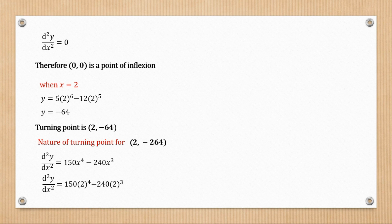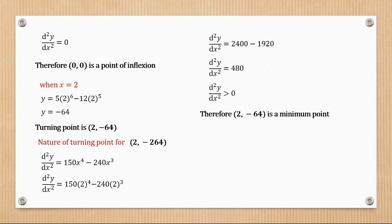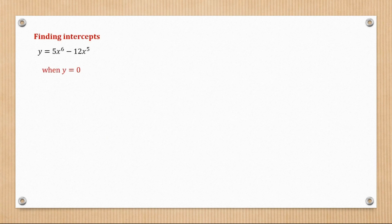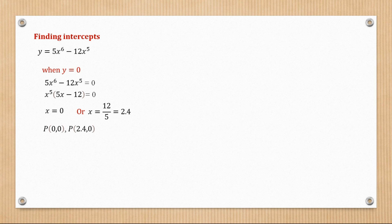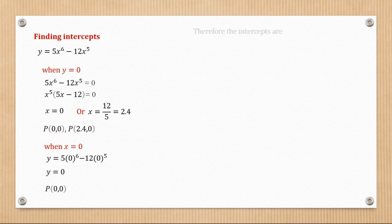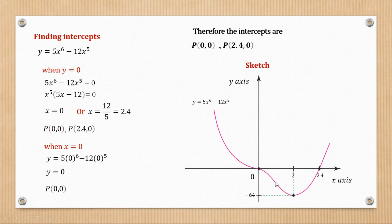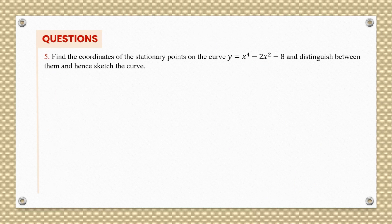For the nature at x = 2, substituting into the second derivative gives 480. Since 480 > 0, this is a minimum point. For intercepts: when y = 0, factorizing gives x = 0 or x = 12/5 = 2.4. When x = 0, y = 0, so the intercepts are (0, 0) and (2.4, 0). The point (0, 0) is the point of inflection, and (2, -64) is the minimum point — that's the curve for y = 5x⁶ - 12x⁵.